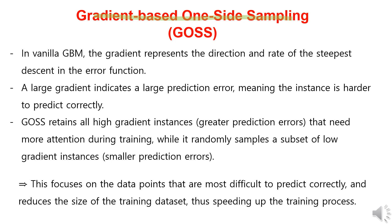Gradient-based One-Side Sampling (GOSS) is a sampling technique used in LightGBM to increase training speed while maintaining performance, and it is useful when dealing with large datasets. In basic vanilla GBM, the gradient represents the direction and rate of the steepest descent in the error function. Larger gradient values indicate higher prediction errors, meaning they are harder to predict accurately. GOSS performs sampling based on the gradient of each data instance, retaining all instances with large gradient values, and randomly sampling instances with small gradient values. This means the model focuses more on data with high gradient values during training, while only selecting a portion of the data with low gradient values — that is, data with smaller prediction errors. This reduces the size of the training dataset, thus speeding up the training process.